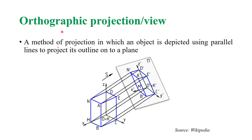What is orthographic projection? It is a method of projection in which the object is depicted using parallel lines projected onto a plane. This plane may be a vertical plane, horizontal plane, auxiliary plane, or a combination of these. We commonly use vertical and horizontal planes to get the front view and top view. For sectional views, we use auxiliary planes.